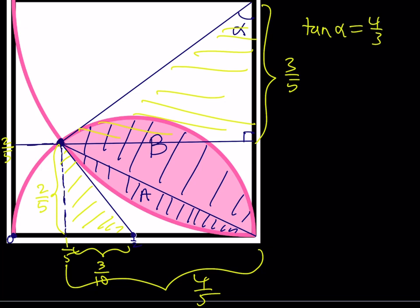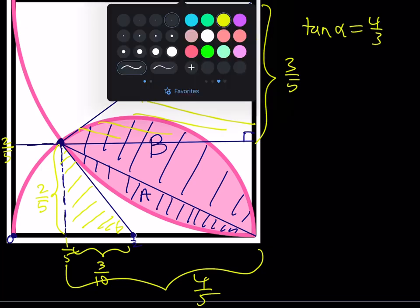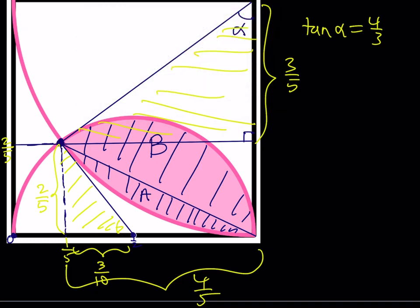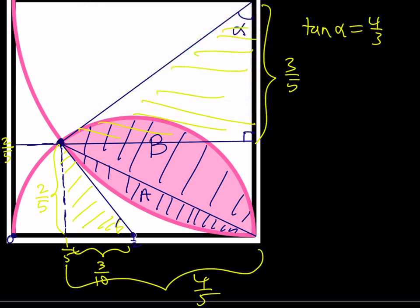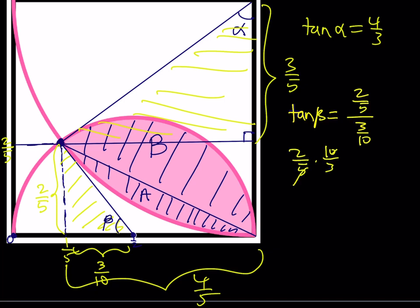Now let's call the angle at the other vertex beta. For that right triangle, the vertical side is 1 − 2/5 = 3/5 and the horizontal base is 1 − 1/5 = 4/5. So tan(beta) = (3/5)/(4/5) = 3/4... wait — actually tan(beta) = 2/5 divided by 3/10 = 4/3 as well. So tan(alpha) = tan(beta) = 4/3, which means alpha = beta. This angle is alpha as well.